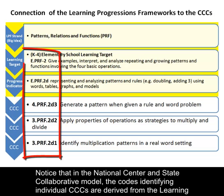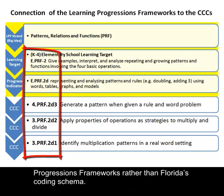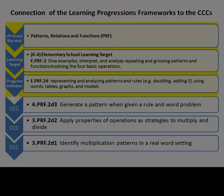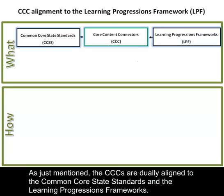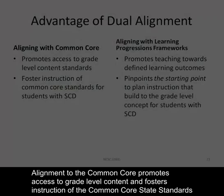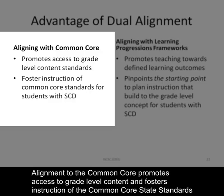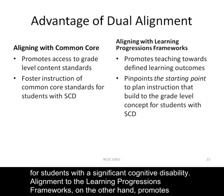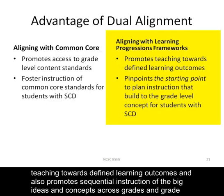Notice that in the National Center and State Collaborative model, the codes identifying the individual CCCs are derived from the learning progressions frameworks, rather than Florida's coding schema. The CCCs are duly aligned to the Common Core State Standards and the Learning Progressions Frameworks. Alignment to the Common Core promotes access to grade-level content and fosters instruction of the Common Core State Standards for students with a significant cognitive disability. Alignment to the Learning Progressions Frameworks promotes teaching toward defined learning outcomes, and also promotes sequential instruction of the big ideas and concepts across grades and grade bands.